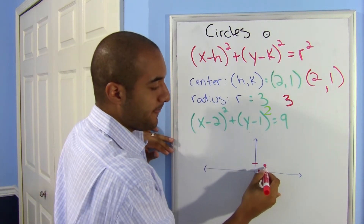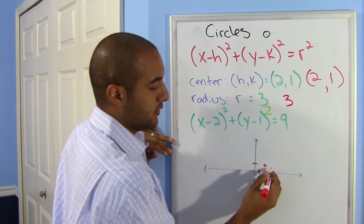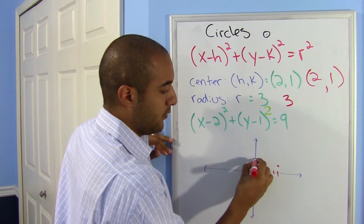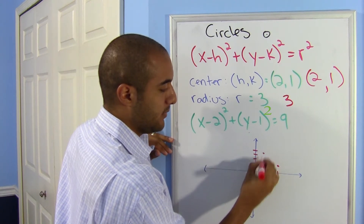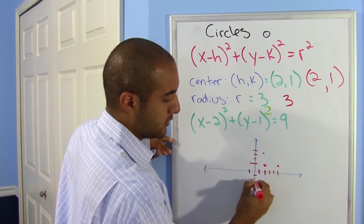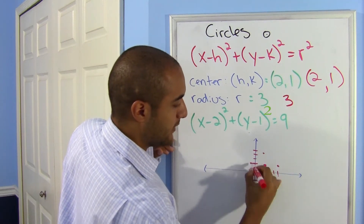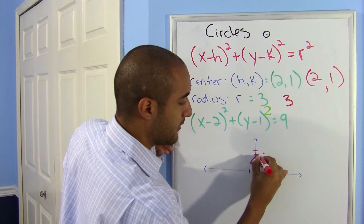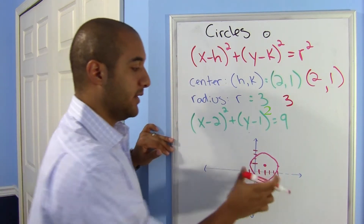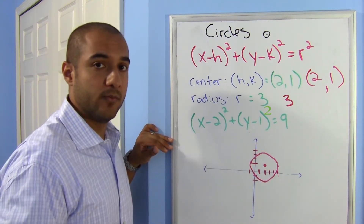From the center, remember a circle has all points equidistant from the center. So since my radius is 3, I'm going to go 1, 2, 3 to the right; 1, 2, 3 above; 3 to the left; and 1, 2, 3 below. Then, as best as you can, you now have at least 4 points to help guide you to make your circle. Hopefully yours comes out better than mine — but I now have the sketch of the graph for my circle. That's why I'm not a doctor.